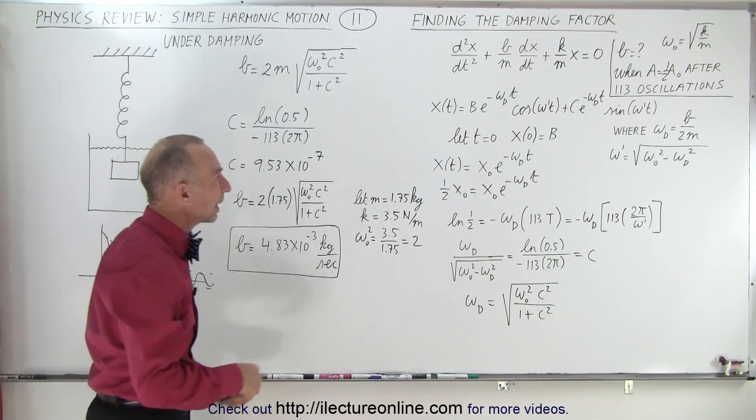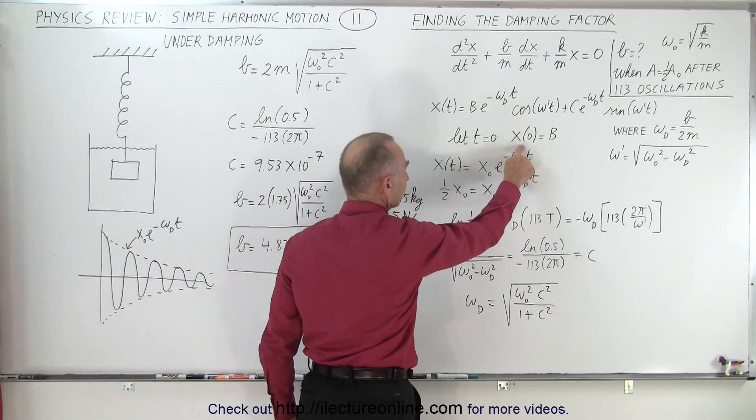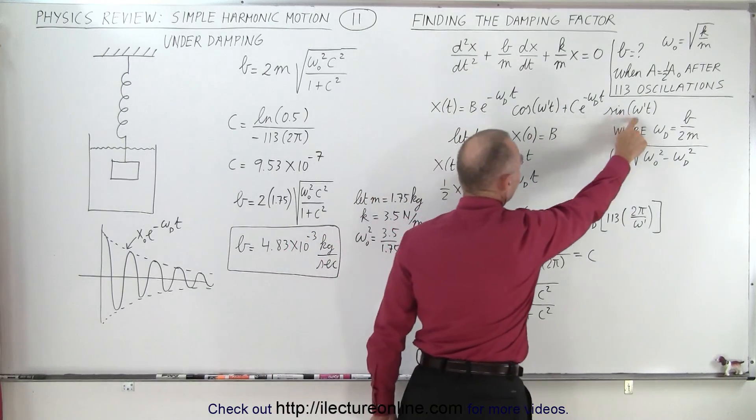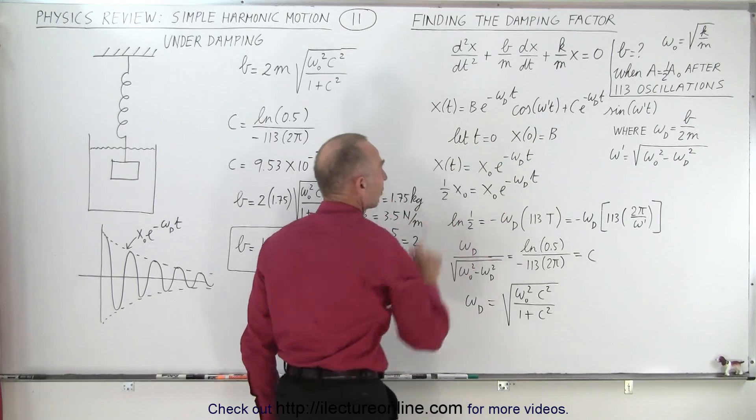So now if we let t equal 0, and we solve this equation, we can then set b equal to the initial amplitude. And the sine disappears, because the sine of 0 is 0, and then the cosine of 0 is 1, so we end up with this equation right here.